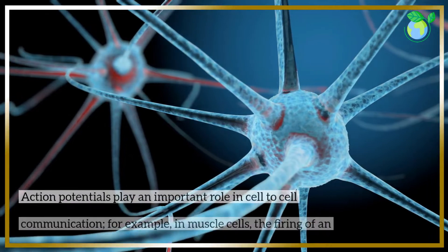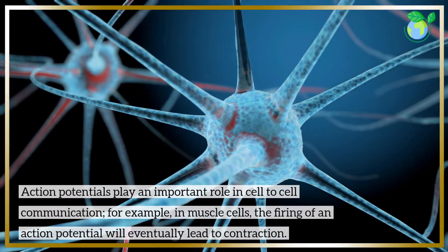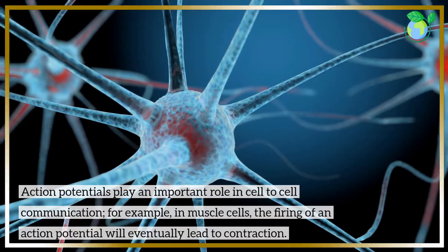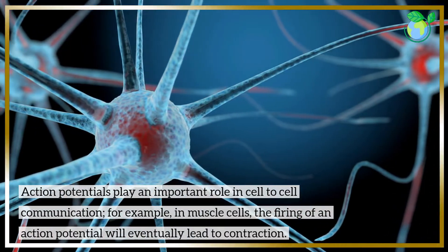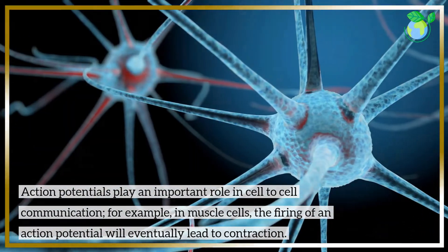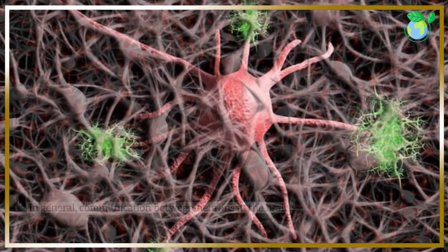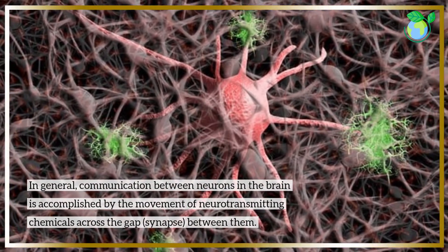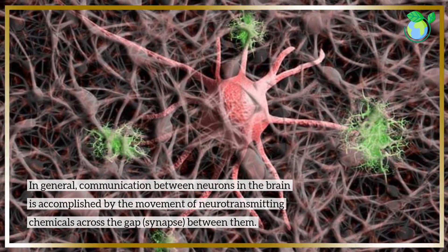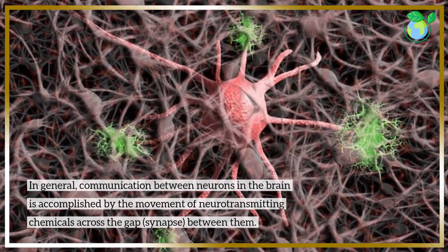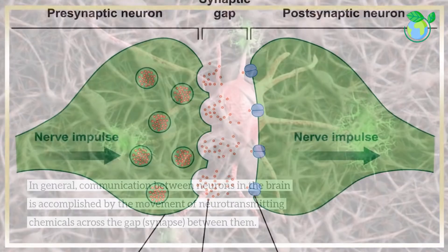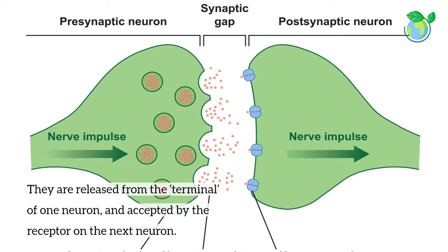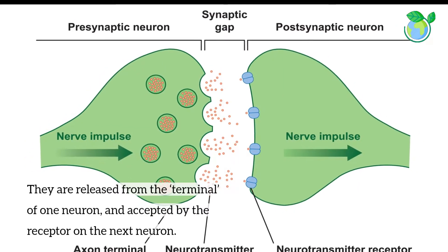Action potentials play an important role in cell-to-cell communication. For example, in muscle cells, the firing of an action potential will eventually lead to contraction. In general, communication between neurons in the brain is accomplished by the movement of neurotransmitting chemicals across the gap, or synapse, between them. They are released from the terminal of one neuron and accepted by the receptor on the next neuron.